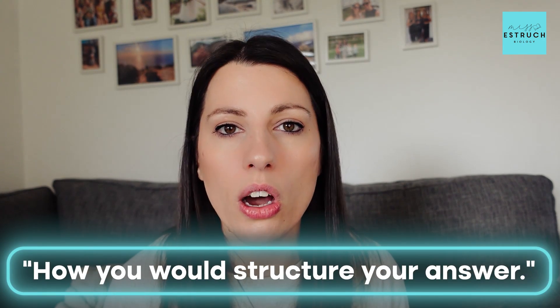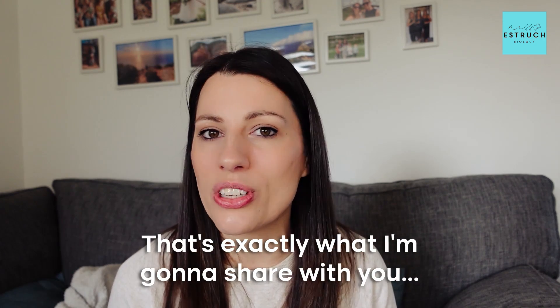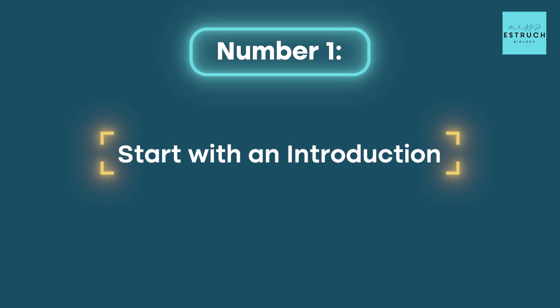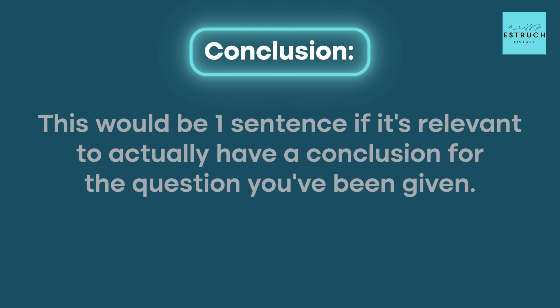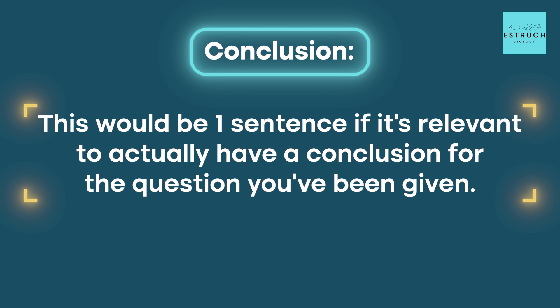Let's go through how you would structure your answer. The best way to get full marks is to use a clear and logical approach. Number one: start with an introduction of about one sentence — define key terms if that is appropriate for the question. Number two is the main body of your answer, usually four to five sentences, where you address both parts of the question in a structured way. And finally, the conclusion — one sentence if relevant — where you summarise and link all the key points together or give a final judgment.